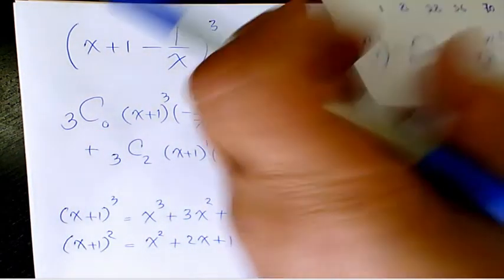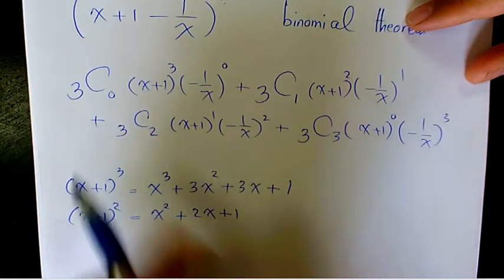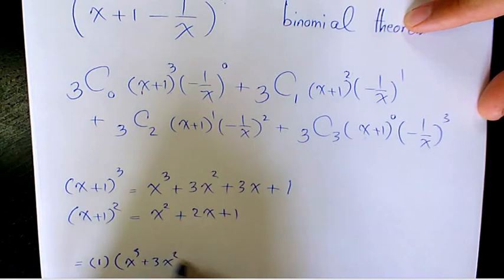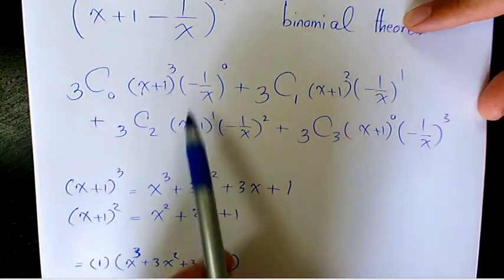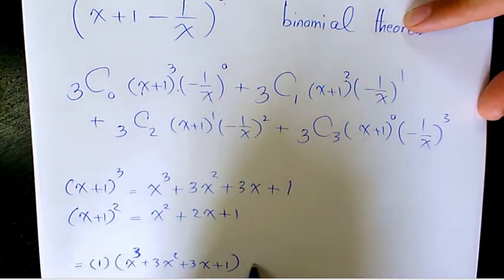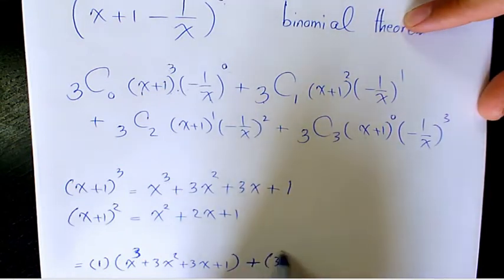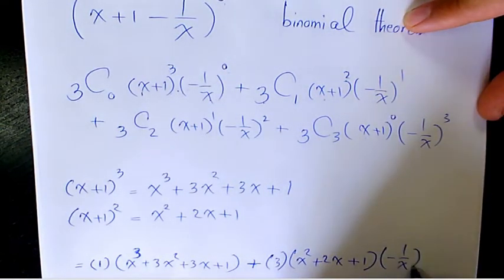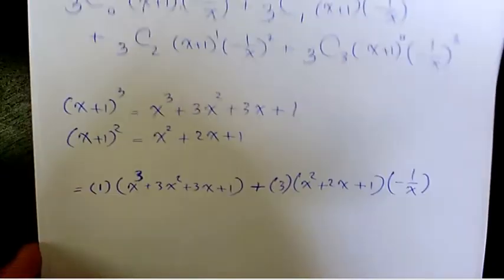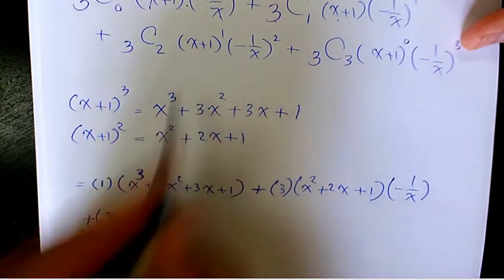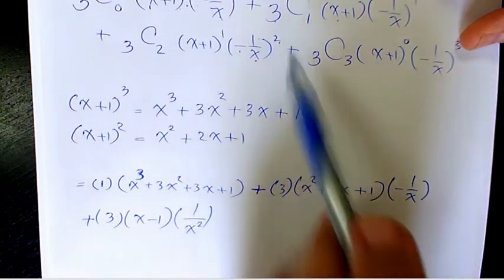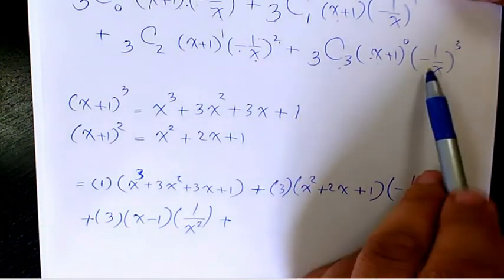Now to simplify the four terms, using Pascal's triangle the coefficients are 1, 3, 3, 1. So the first term is 1 times (x+1)³ — which is the expanded form we found — times (-1/x)⁰, which is 1, so we just have the expansion. Then 3C1 is 3, times (x+1)² which is (x² + 2x + 1), times (-1/x). Then we have (3x + 1) times (-1/x)², which is positive 1/x² since the exponent is even. Plus 1 times (-1/x)³, which is -1/x³.